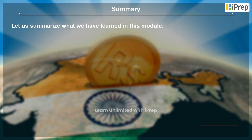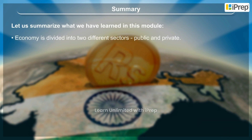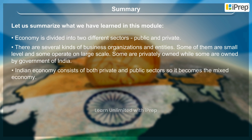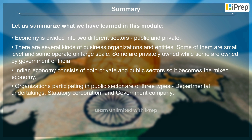Let us summarize what we have learned in this module. The economy is divided into two different sectors: public and private. There are several kinds of business organizations and entities — some are small level and some operate on large scale, some are privately owned while some are owned by the Government of India. The Indian economy consists of both private and public sectors, making it a mixed economy.